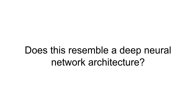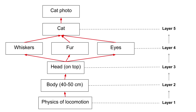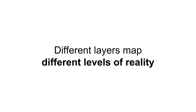You see that this hierarchy of how data was generated in the real world resembles the hierarchy of a deep neural network, and it's no coincidence. The hints we have so far suggest that different data at different levels corresponds to what layers of a deep neural network end up modeling. So layer 5 will end up recognizing a cat because layer 2 recognizes a body, layer 3 recognizes a head, and so on and so forth — different layers of a neural network map to different levels of reality.